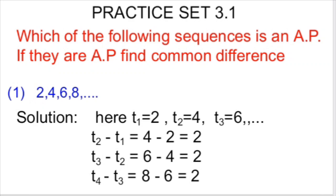Here T1, the first term, is 2; T2, the second term, is 4; T3, the third term, is 6 and so on. So T2 minus T1 is 4 minus 2, which is 2. The third term minus the second term is 6 minus 4, which is 2. The fourth term minus the third term is 8 minus 6, which is 2.